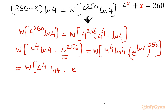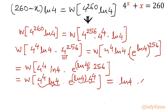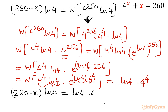We write this as 4 to the power 4 times ln4, times e raised to the power (ln4 times 256). And 256 can be written as 4 to the power 4. Now we put that in brackets: the coefficient and exponent are matching, so this value will be ln4 times 4 to the power 4. Putting this back into the equation: (260 minus x) times ln4 equals ln4 times 4 to the power 4. The ln4 terms cancel out, and 4 to the power 4 is 256. So 260 minus x equals 256, which means x equals 4.